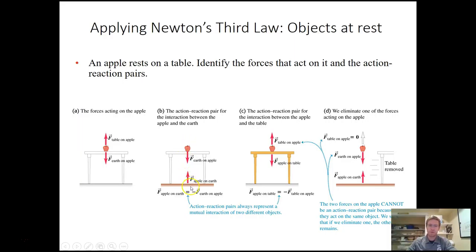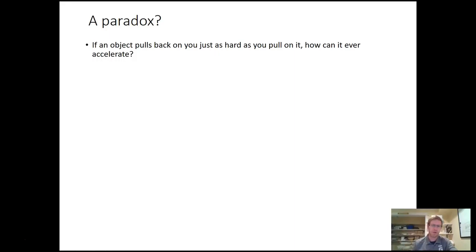Applying Newton's Third Law: the Earth pulls on the apple, and the apple pulls on the Earth with an equal and opposite amount. Your weight is the Earth pulling on you, and you pull back on the Earth with the exact same force. Also, the apple pushes down on the table and the table pushes back up with an equal and opposite force — these are action-reaction pairs. But if you remove the table quickly, that force disappears, and the apple's net force is downward, so it accelerates down, even though it's still pulling on the Earth.